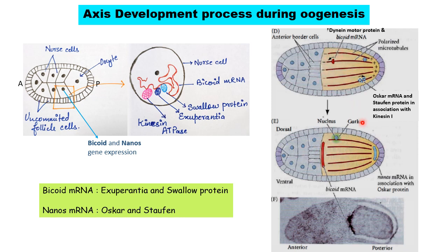In the case of nanos, oscar mRNA and staufen proteins are transported to the posterior end of the oocyte, where the positive end of the microtubules is situated. There, staufen protein translates oscar mRNA into oscar protein. This oscar protein acts as a trap and binds to nanos mRNA in the posterior end. Also, nanos mRNA has a 3' UTR sequence that helps it bind to the cytoskeleton in the posterior end. In this way, nanos mRNAs are concentrated in the posterior end and bicoid mRNAs are concentrated in the anterior end of the oocyte.